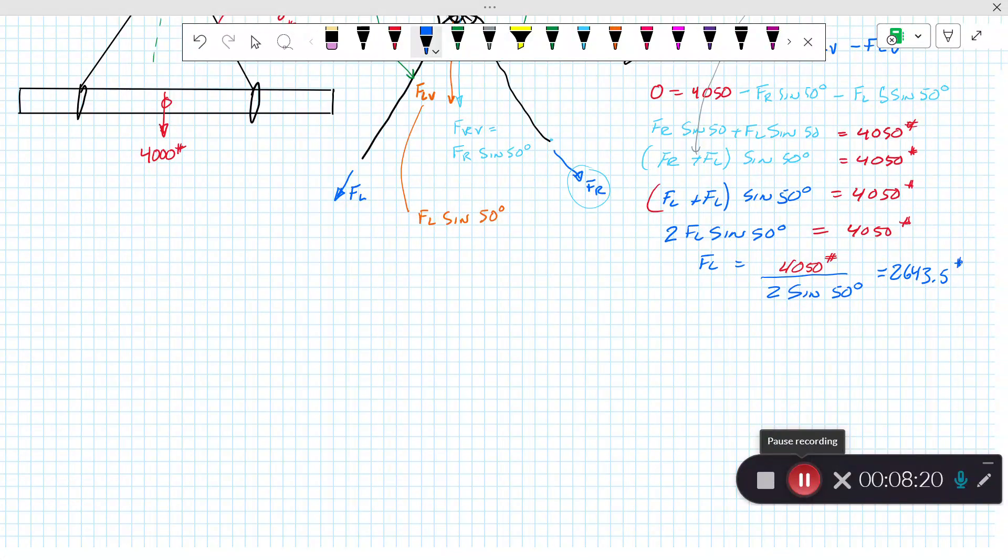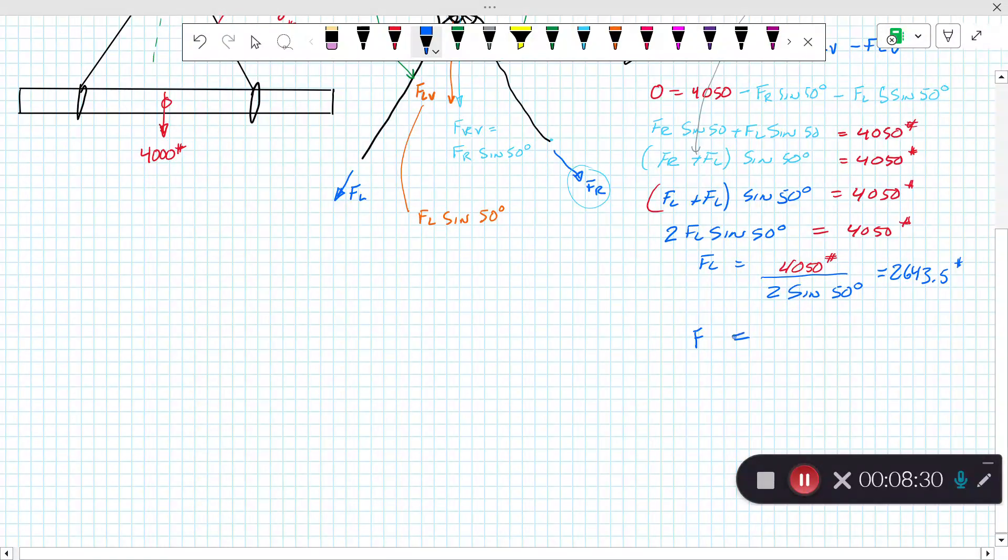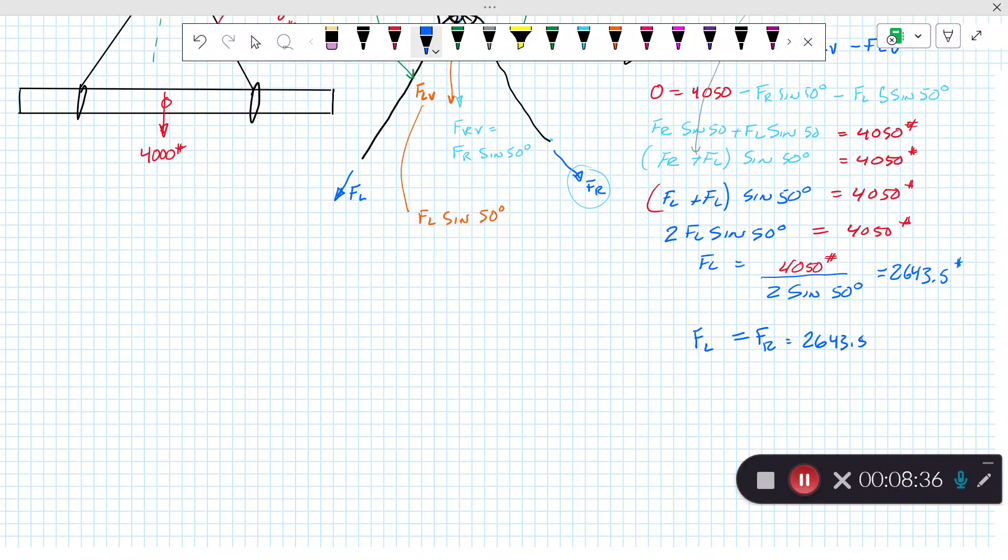So the left sling is 2,643 and the right sling will be the same. FL equals FR equals 2,643.5 pounds.